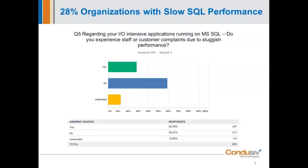We asked IT professionals how many have performance problems so bad that they're actually getting staff or customer complaints due to sluggish performance — slow queries, slow performance, batch jobs taking too long. The graph shows that 28% of all organizations raised their hand and said yes, that's them. Over the years we've been doing this survey, this number has not gotten any better. Last year it was around 27%, and we've gone up to 28% with this incremental creep — right in that pocket of a full quarter of people suffering from this.